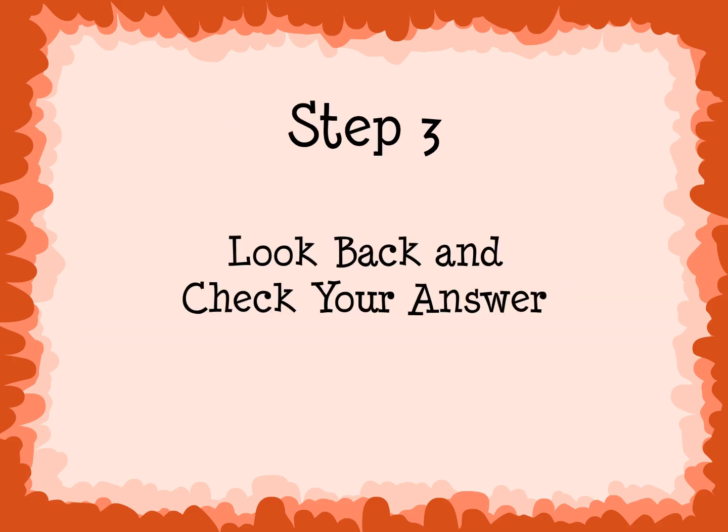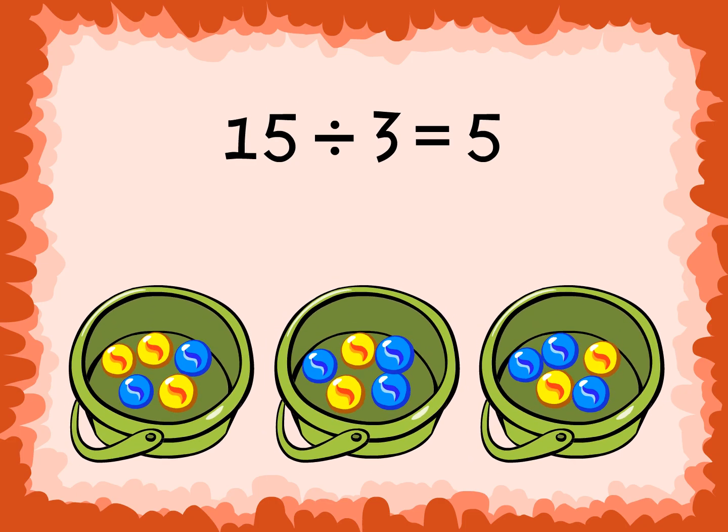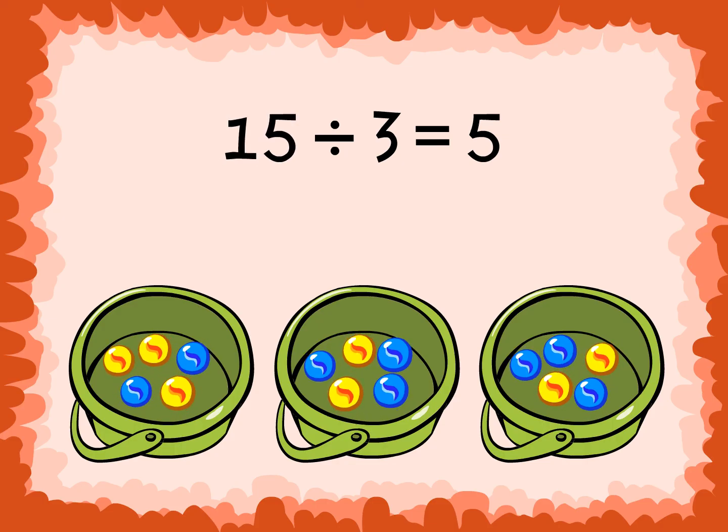Step 3. Look back and check your answer. Did you use the correct number of buckets? Yes. Did you use the correct number of marbles? Yes. Did you make equal groups in all of the buckets? Yes. And does the quotient you got make sense? Yes.